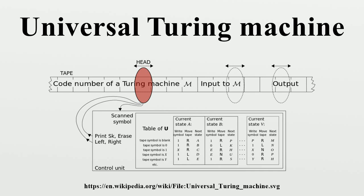This code is placed on alternate squares — the F-squares — leaving the E-squares empty. The final assembly of the code on the tape for the U machine consists of placing two special symbols one after the other, then the code separated out on alternate squares, and lastly the double colon symbol.